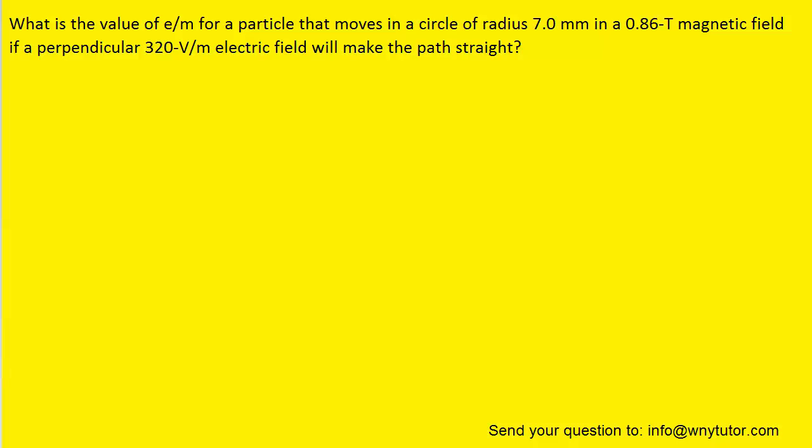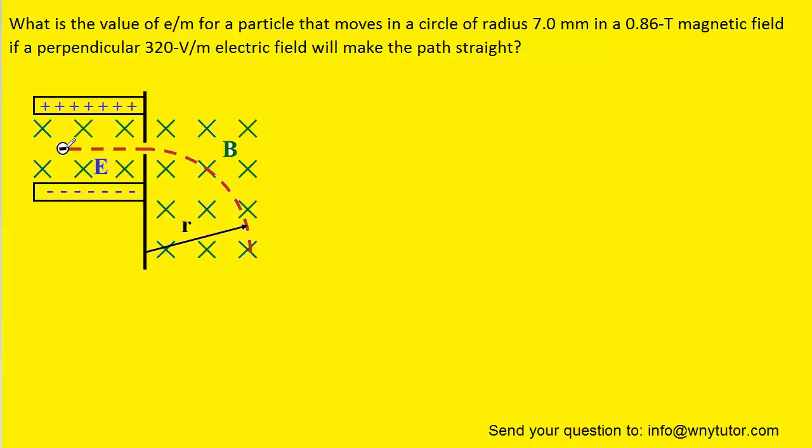We'll go ahead and first draw a picture that represents the information described in the problem. So here is this negatively charged electron, and it's traveling between two plates, and then it enters a magnetic field and leaves the region of where the plates were, and as it enters into that magnetic field, it begins to move in a circular trajectory.